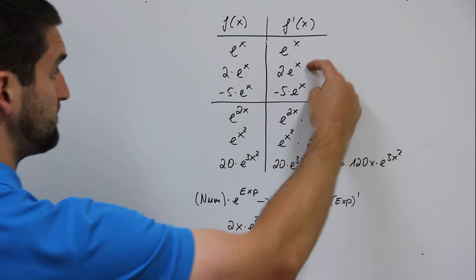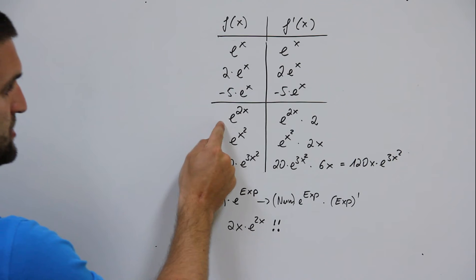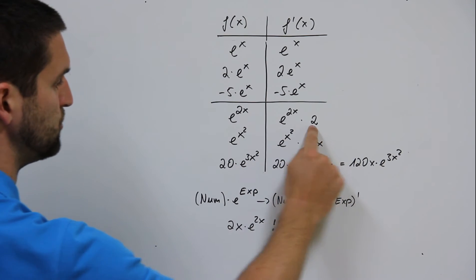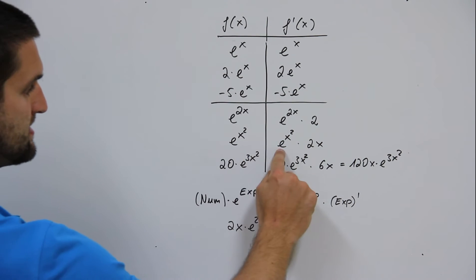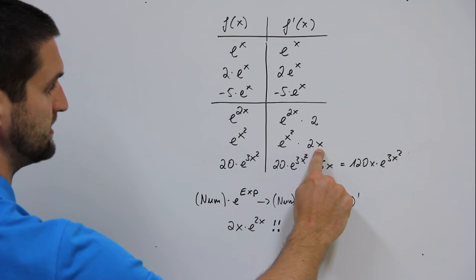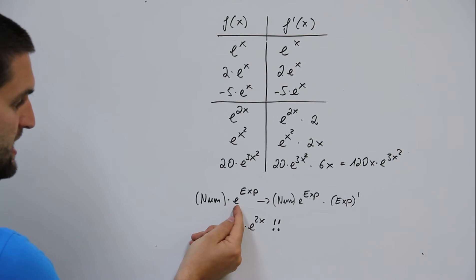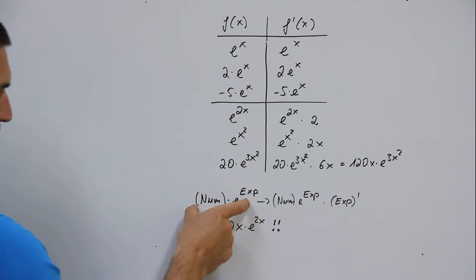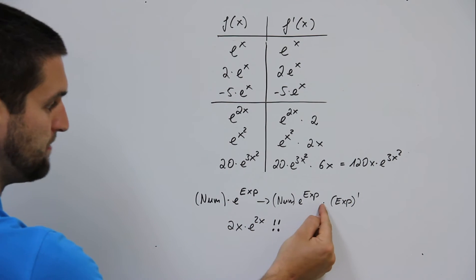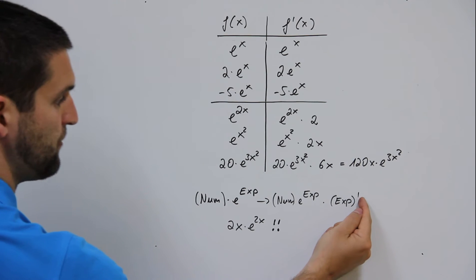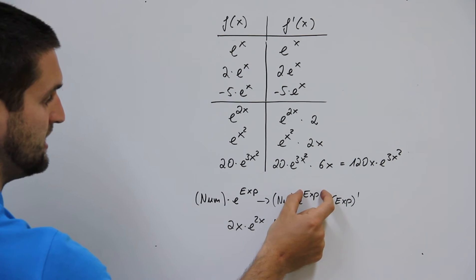But what is happening now? e to the power 2x — the same, times 2. e to the power x squared — the same, times 2x. What is happening? When we have a number times e to the power of something, we write down the same and multiply by the first derivative of the exponent itself.